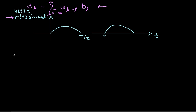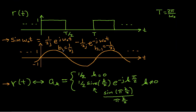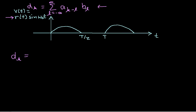Since b₁ is non-zero and b₋₁ is non-zero and all other b's are zero, the summation reduces to just two terms: when l equals 1, we get a(k−1) times b₁, and when l equals −1, we get a(k+1) times b₋₁. Now we just work out these terms and simplify.